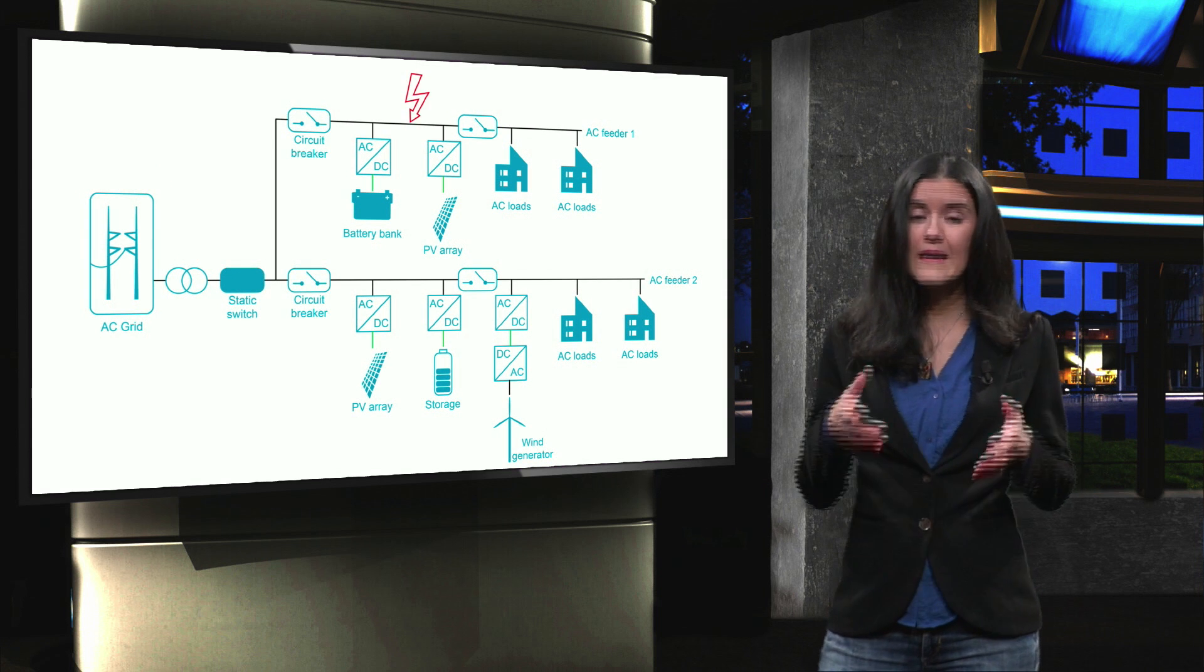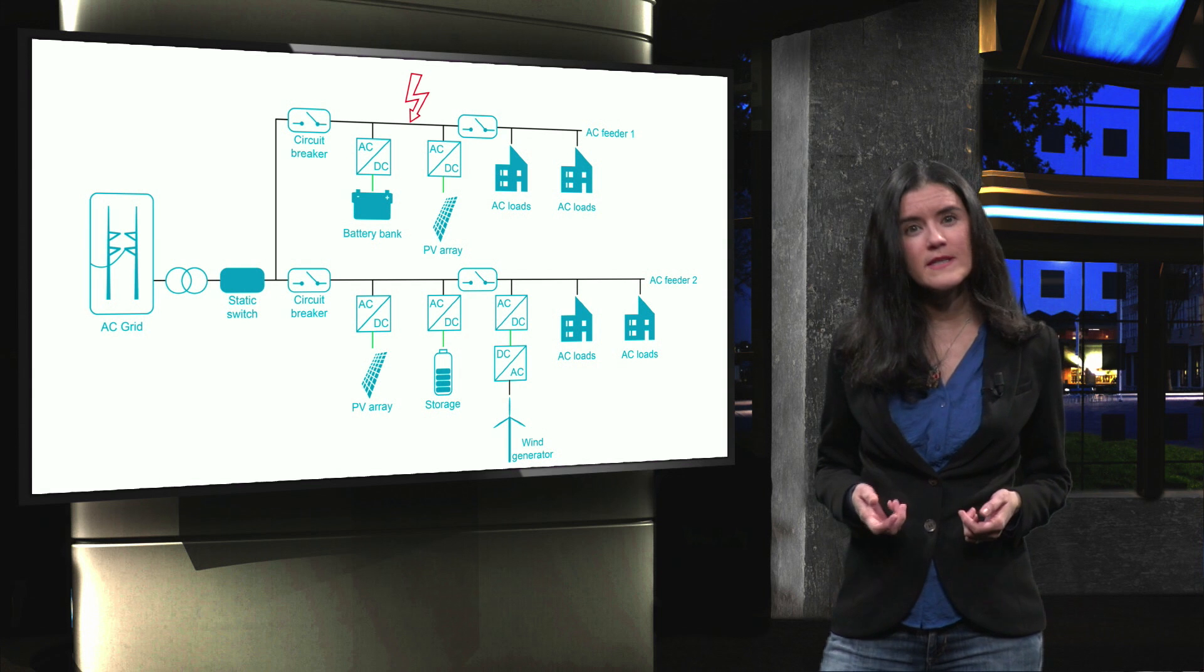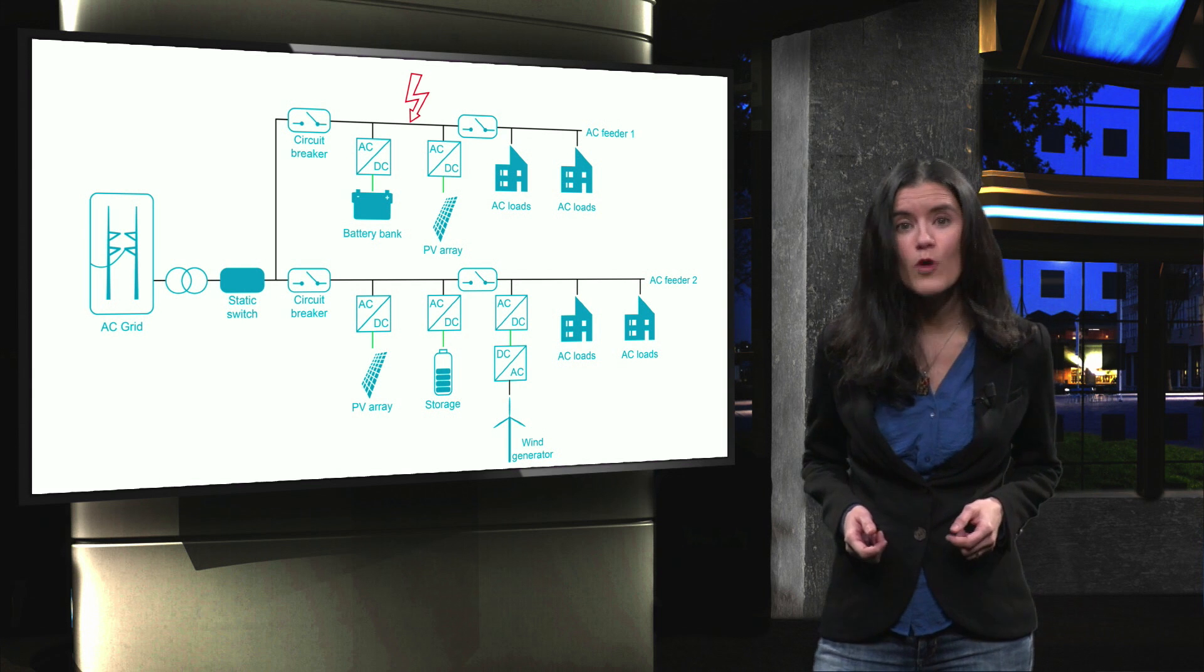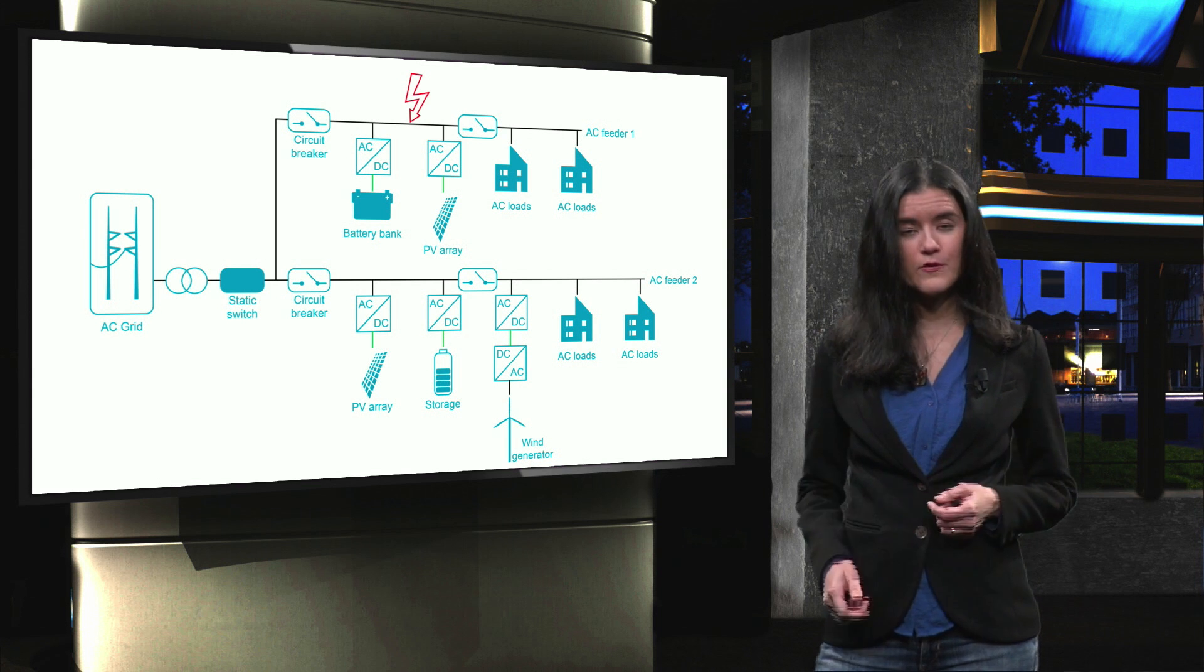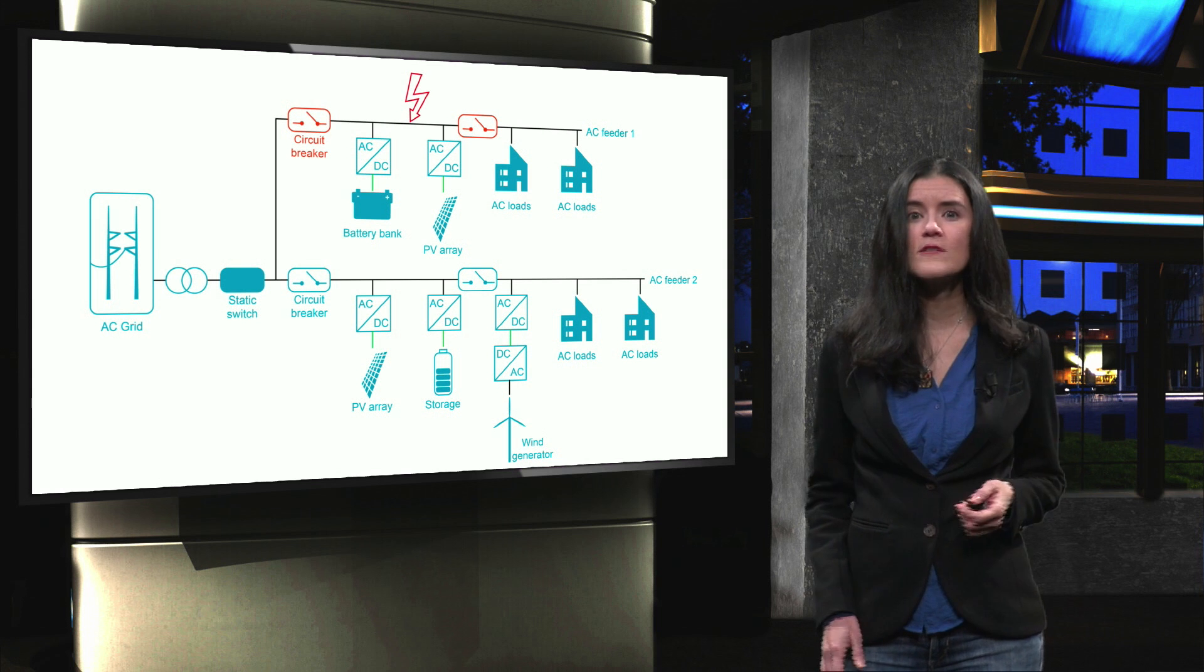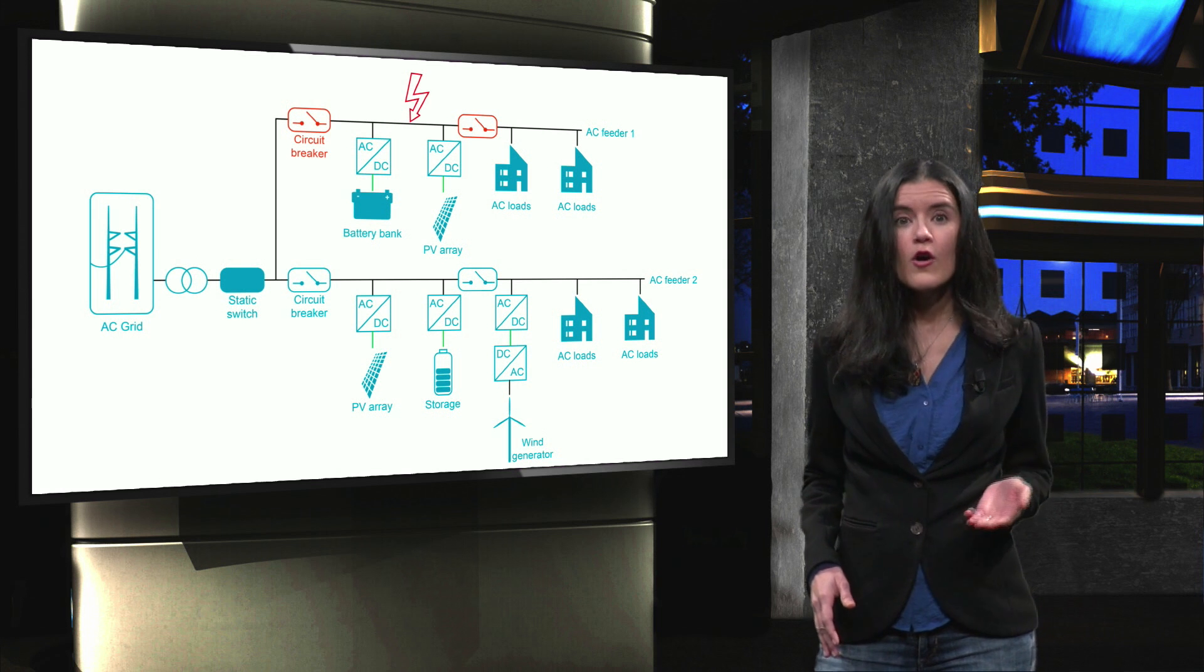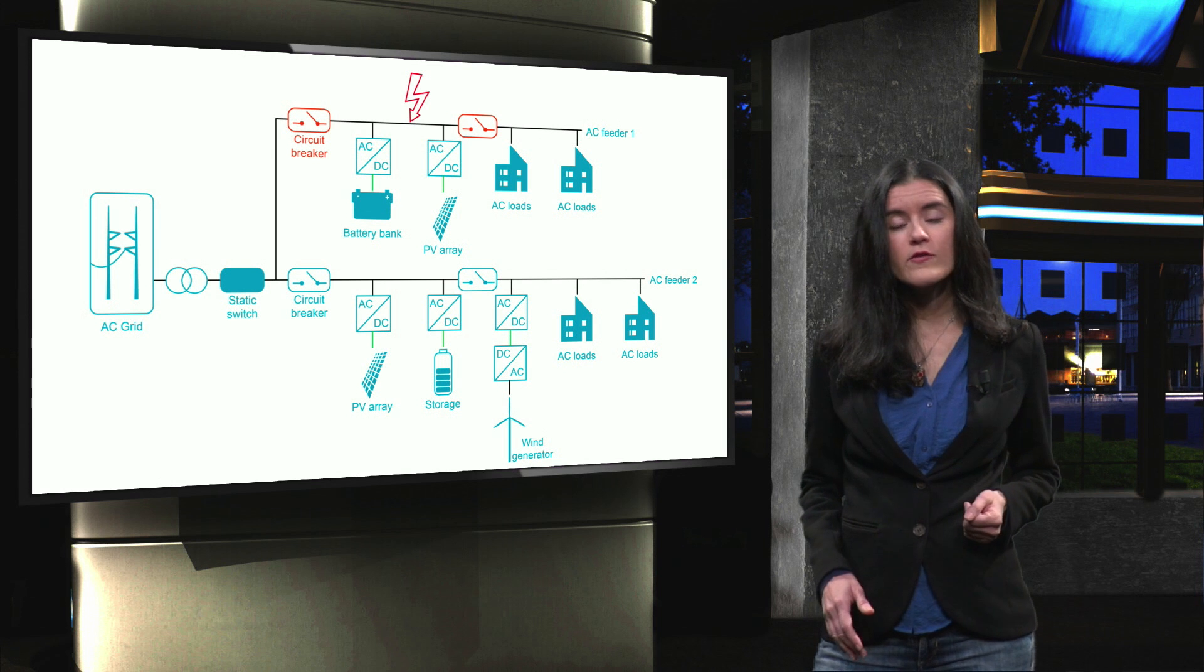On the other hand, if the fault occurs inside the microgrid, the protection scheme will aim at isolating the smallest possible area of the distribution feeder. This is intended to reduce the negative impact of the fault on the operation of the microgrid to the minimum.